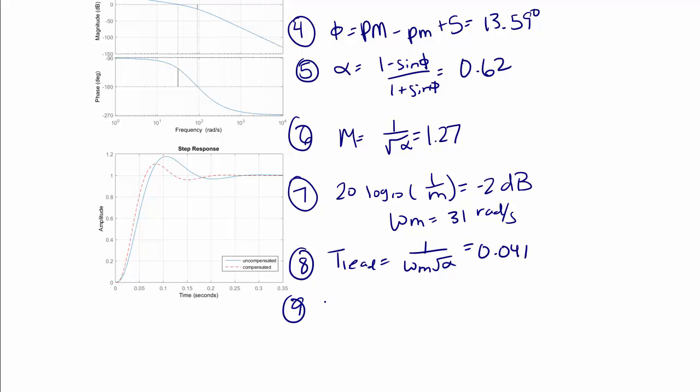Step 9, we find the zero in the pole for the lead compensator, so Z lead is equal to 1 over T lead, which is equal to 24.41, and P lead equals Z lead divided by alpha, and P lead is equal to 39.37.